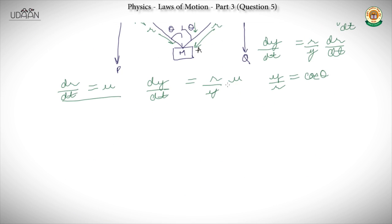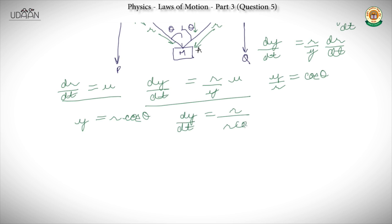We can see that Y equals R·cos θ. If we put this into the equation, then we have dy/dt equal to R upon (R·cos θ) into U, which gives U upon cos θ. So we have expressed dy/dt — the velocity of mass M — in terms of U and θ. This is our answer to question 5.